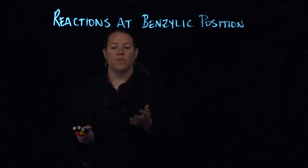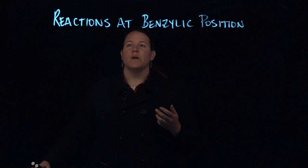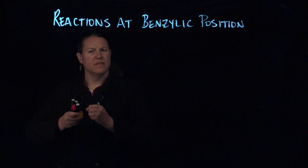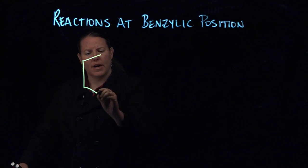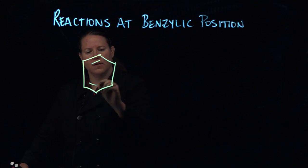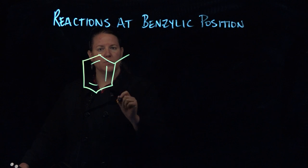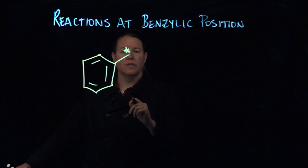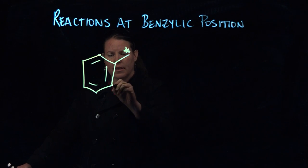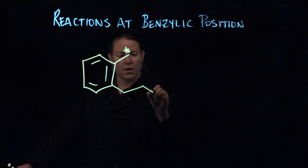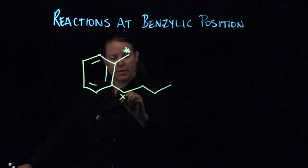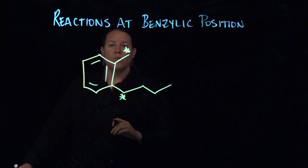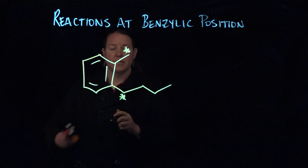So first, what is the benzylic position? Well, that's good to define. If you have a substituent, that's this position right here. That substituent can be CH3 or some long chain - the benzylic position would still be right there. So it's one carbon away on a substituent from the benzene ring.